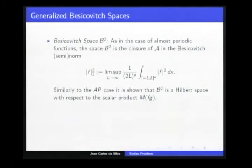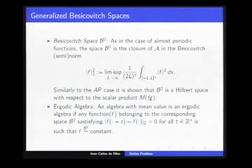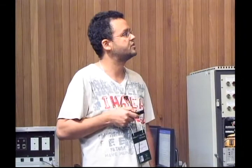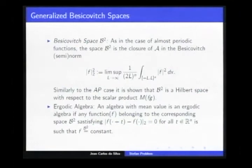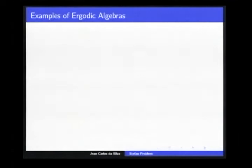The generalized space is the closure of the set A with respect to the semi-norm. This space is a Besicovitch space with this scalar product. An algebra with mean value is ergodic if any function belonging to the corresponding space B2 that is equivalent to its translations must be constant in the sense of B2.